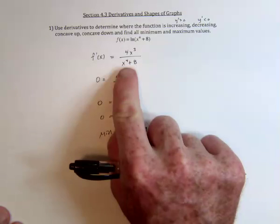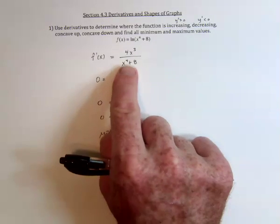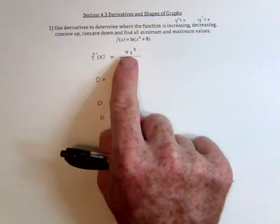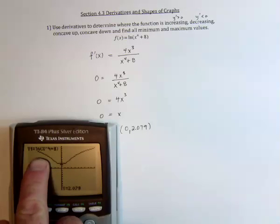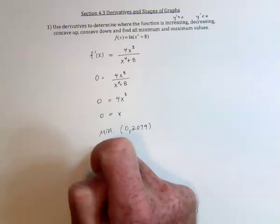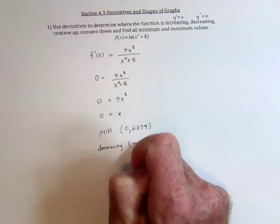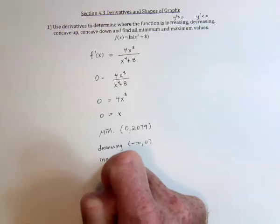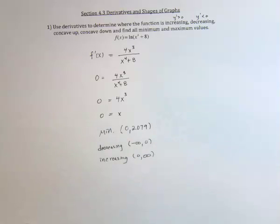Going back to look at this: the denominator has an even power and a positive number, so this can only be positive. Then the only way the derivative can be negative is if x is negative. So that means the derivative is negative — in other words, it's decreasing to the left of zero and increasing on the right-hand side. So decreasing from negative infinity to zero, not including zero, and increasing from zero to positive infinity, not including zero.